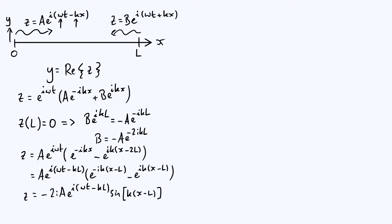At this point we've already shown that a standing wave has formed, because the x's and the t's have separated out from each other. Taking the real part of z, everything in front of the sine term gives a sinusoidally varying function of time, multiplied by a sinusoidally varying function of space — and that's exactly a standing wave. It's not moving anywhere overall.